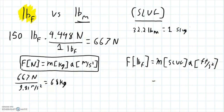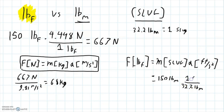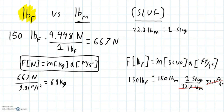So 32.2 pounds mass equals one slug. If I have my mass in pounds mass and want to get force, I take 150 pounds mass, divide by 32.2 pounds mass per slug, then multiply by the acceleration due to gravity, 32.2 feet per second squared. On Earth, those 32.2s cancel out, and we're left with 150 pounds force equal to 150 pounds mass.